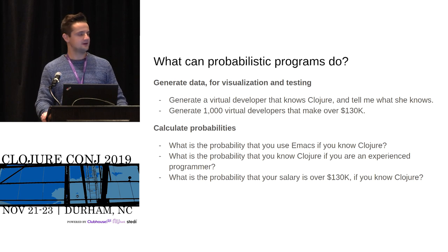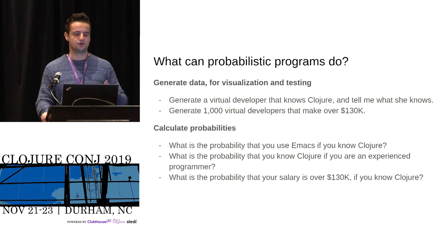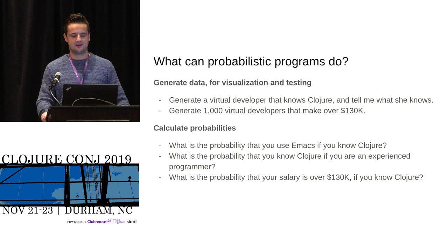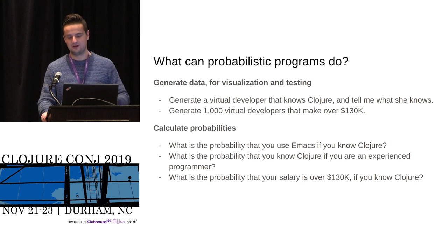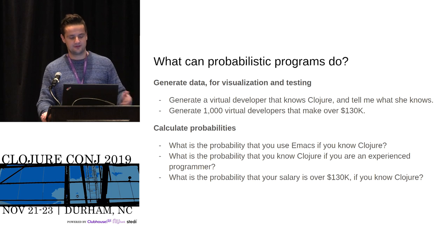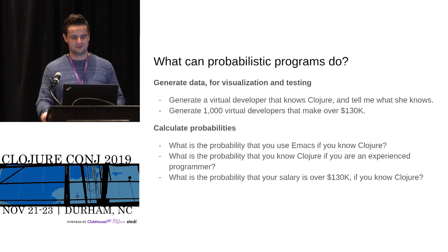You can also pose probability questions to those programs. For example: what is the probability that you use Emacs if you know Clojure? Or what is the probability that you know Clojure if you're an experienced programmer? Or what is the probability that your salary is over 130K if you know Clojure? All of those questions can be answered with a probability from our holistic programs.